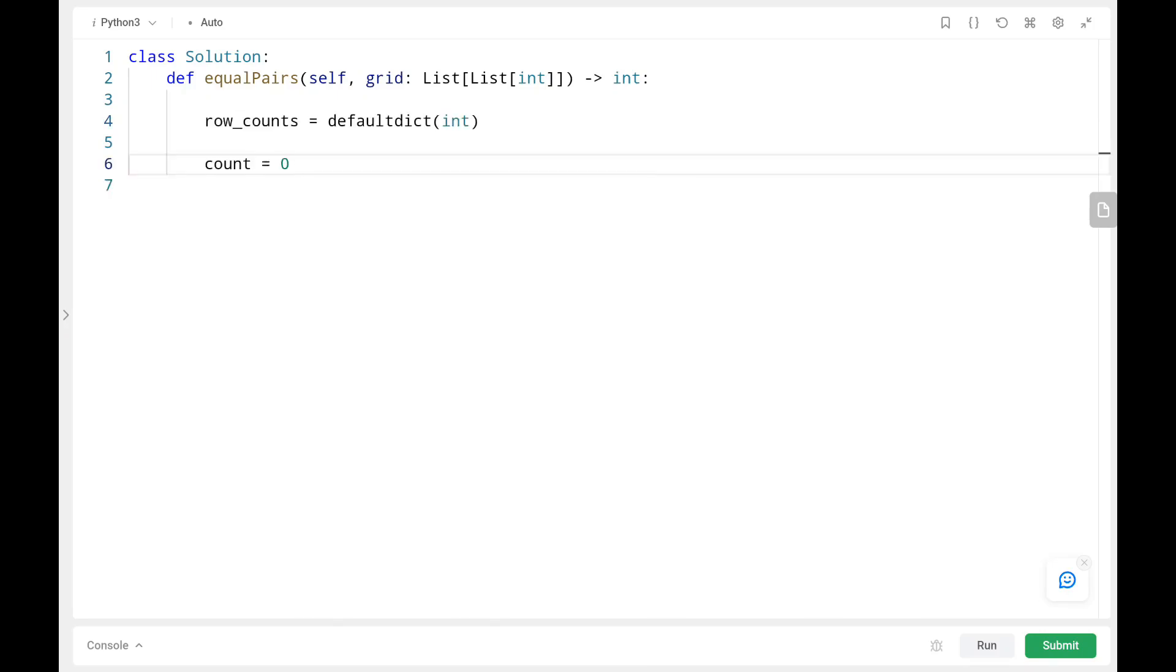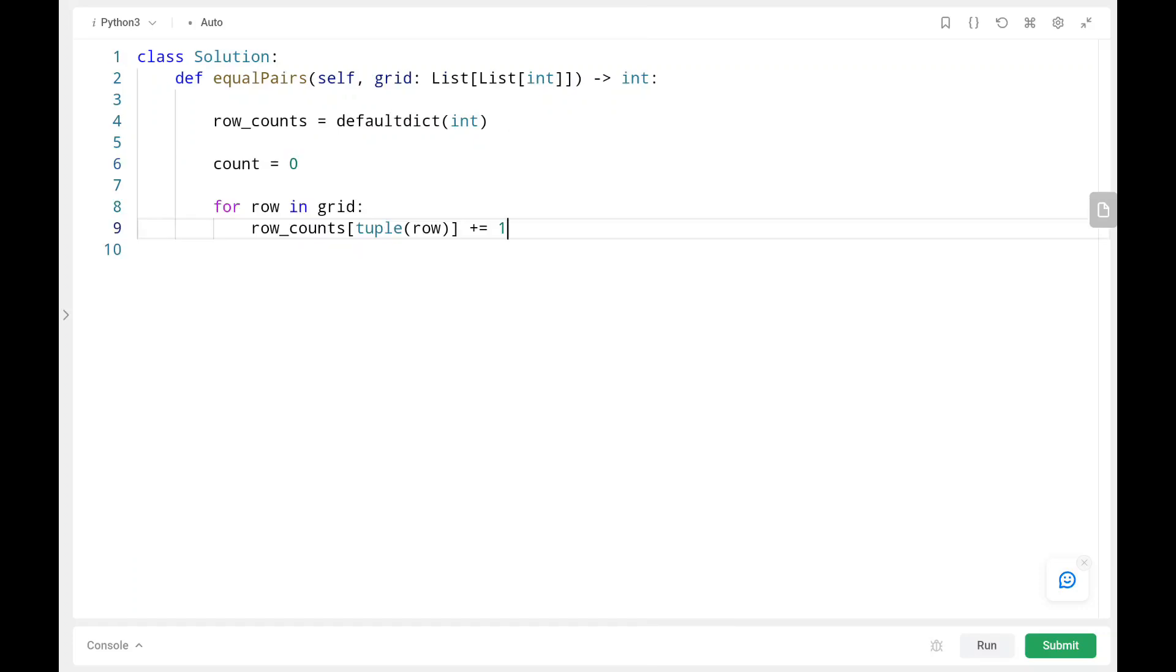So initially we are initializing the row counts dictionary and we will be having the count variable which will be initialized as zero at the start. So then we are going to pick each and every row from the grid and we will convert that row into a tuple. Then we will store that in the row counts dictionary as one if it appears once. Else if it is repeated, it will increase by one. So then we need to do the transpose of the matrix to access the columns. So where the zip function will give us the list of tuples where we will be having the columns as tuples.